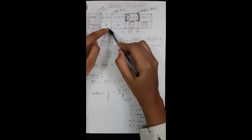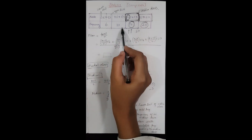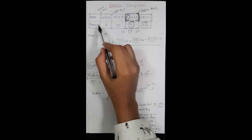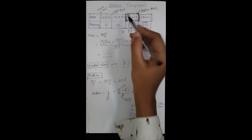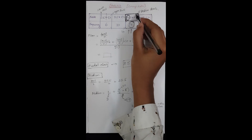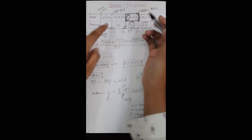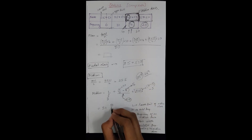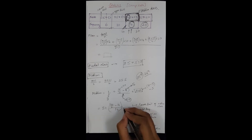Capital F is the cumulative frequency preceding the median class — we add all frequencies of classes above (before) the median class, but not including it. So capital F equals 6 plus 10, which is 16. Substituting: Median = 5 + (50/2 − 16) / 14 × 3, which gives the median value.